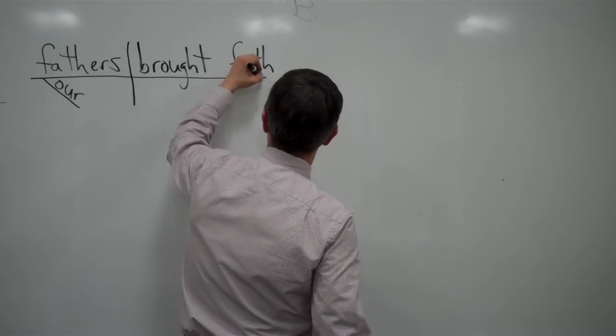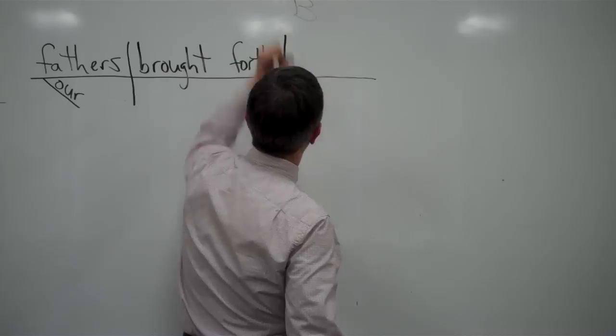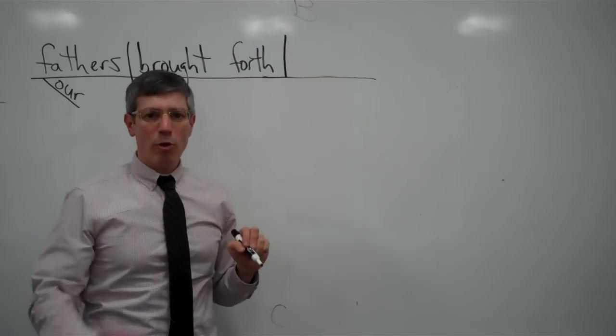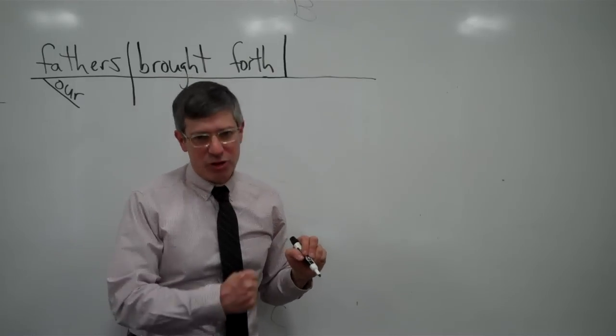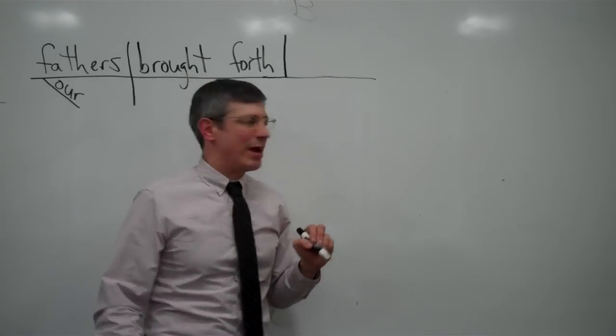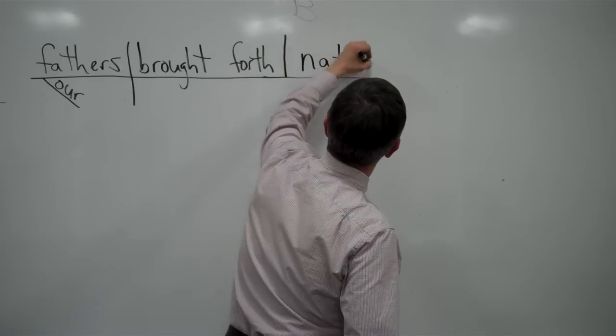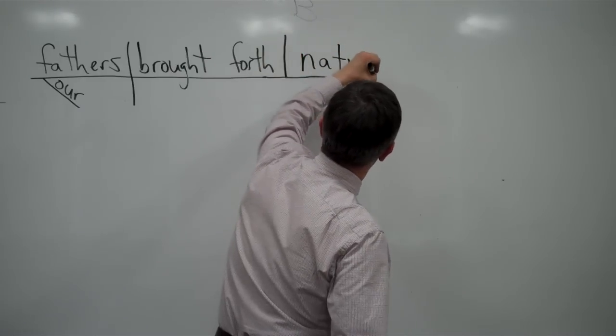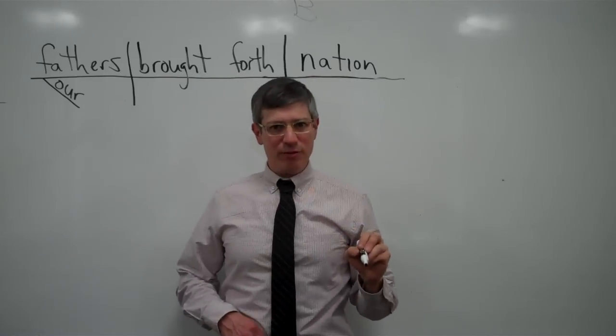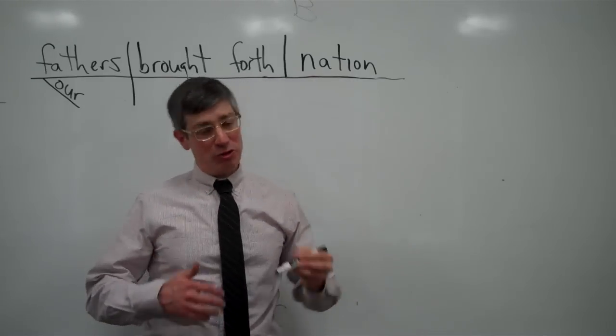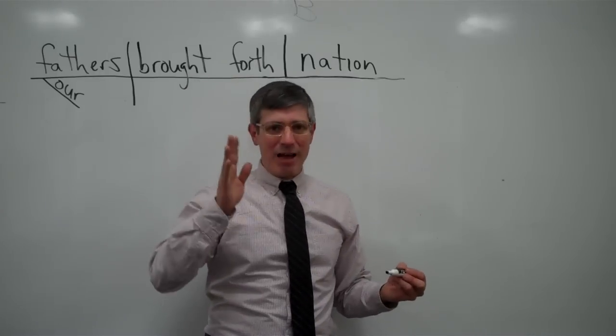So what was brought forth? There's a direct object. What was brought forth? If there's an answer to that question. And there is. A nation. That means we're dealing with a direct object. So, nation. Let me hold off putting a and new there. Those would both be adjectives, of course. Which nation? A nation. Which nation? A new nation. That's which nation. Those are going to be adjectives.